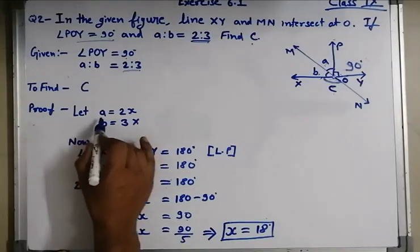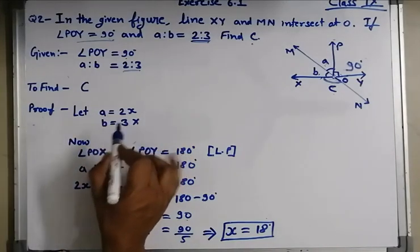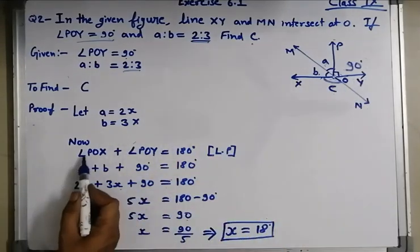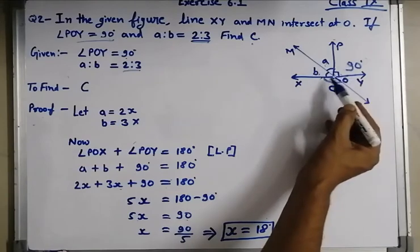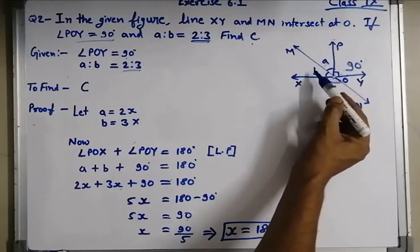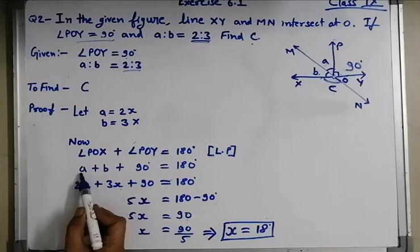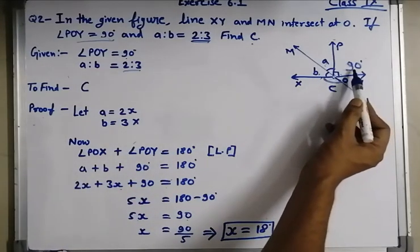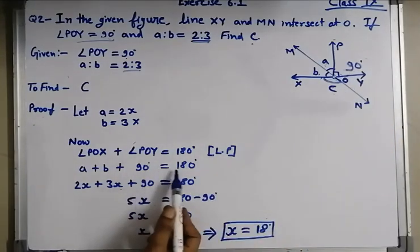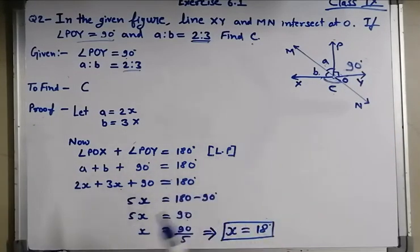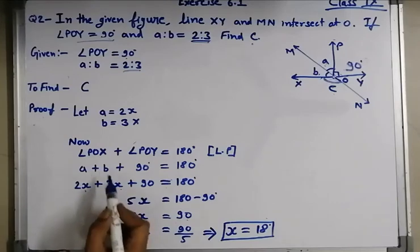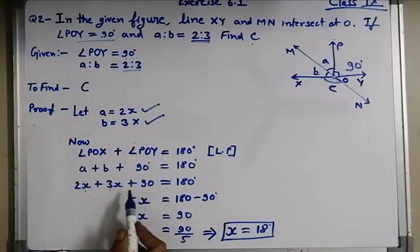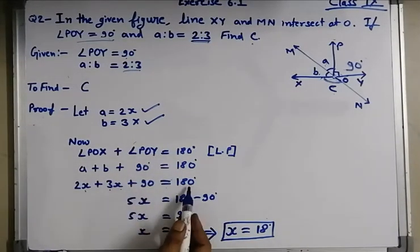Proof. Let A is equal to 2x and B is equal to 3x. Now we will use linear pair on line XY. Angle POX is the sum of two angles A and B. So we will write A plus B plus angle POY. POY is already given as 90 degrees, equal to 180 because of linear pair. Now A is equal to 2x and B is equal to 3x, so 2x plus 3x plus 90 equals 180.